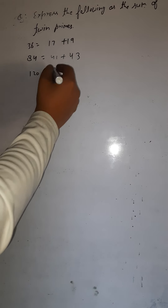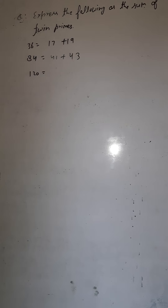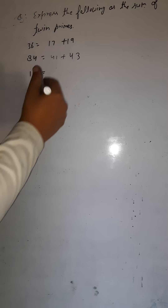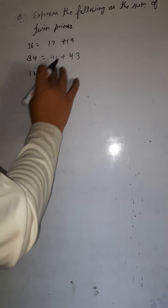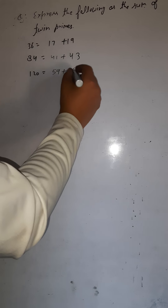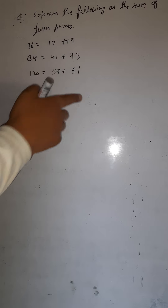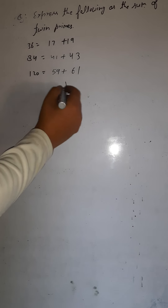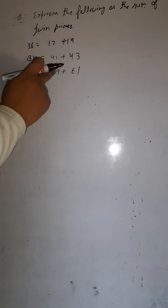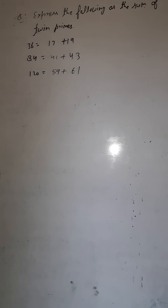For 120: try it yourself first. The answer is 59 plus 61. Between 59 and 61 is 60, which is composite, so 59 and 61 are twin primes, and their sum is 120. That's all for today. We'll discuss some new questions in the upcoming videos. Till then, stay tuned and keep watching. Thank you, have a good day.